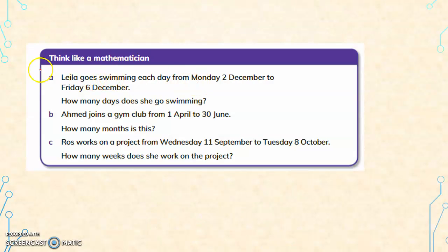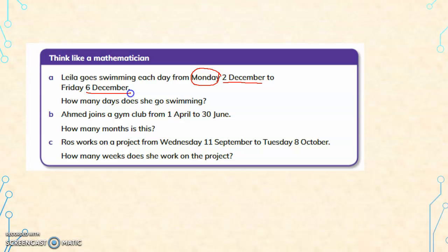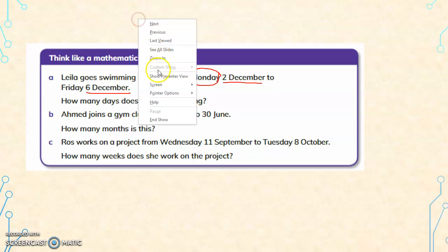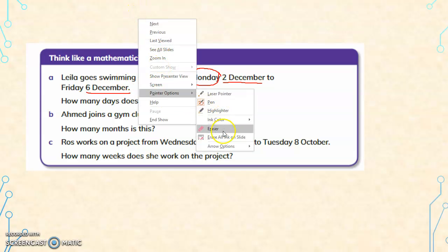Let us look at a few problems. Laila goes swimming each day from Monday 2nd December to Friday 6th December. Since the year is not known to us, we will look for the number of days from 2nd December to 6th December. Let us not rely on Monday or Friday alone, since in the calendar the days might not be the same.